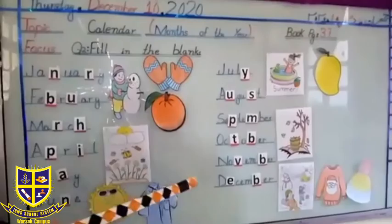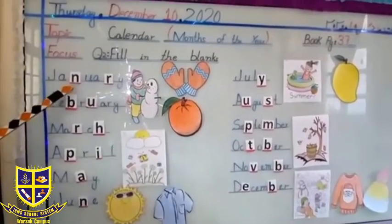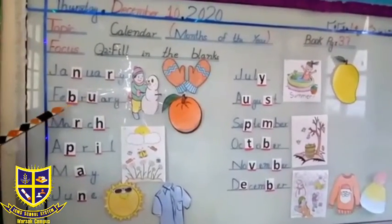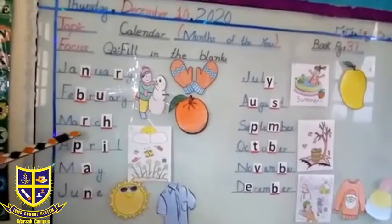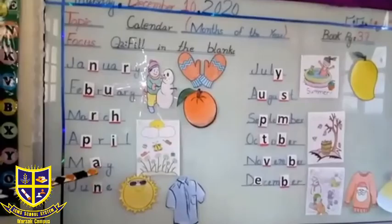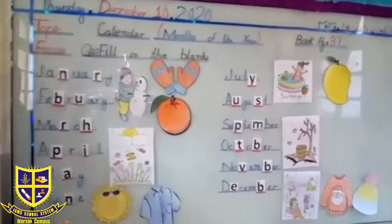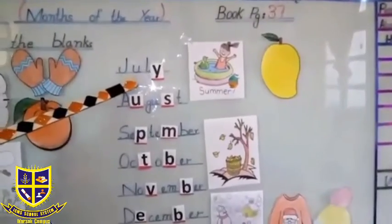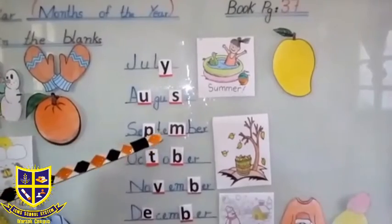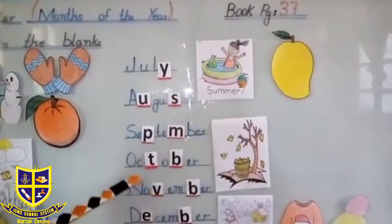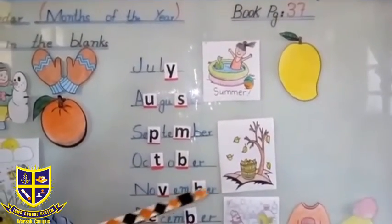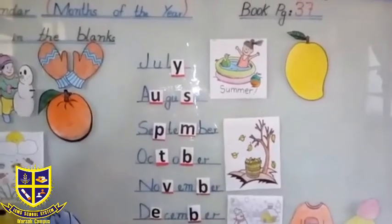Now the names of all months are complete. Read with me: January, February, March, April, May, June, July, August, September, October, November, December.